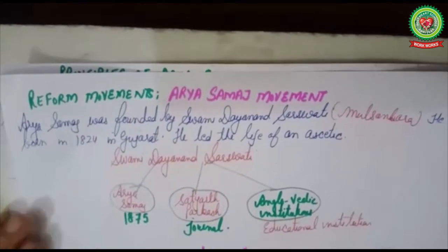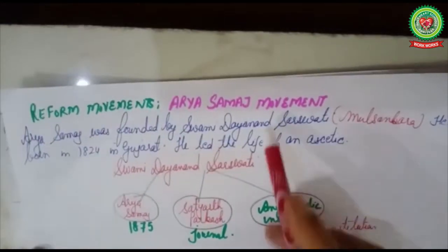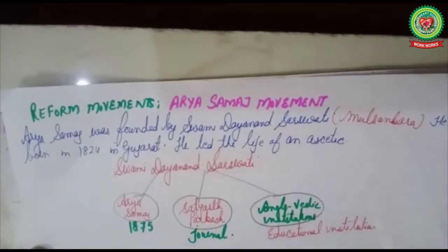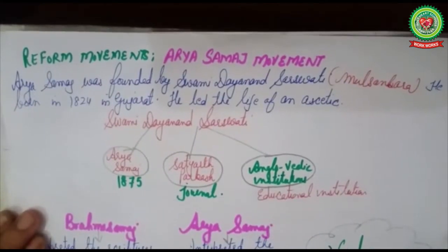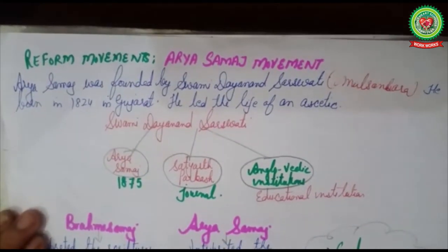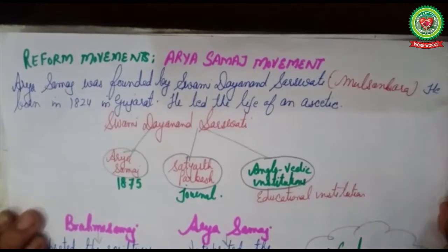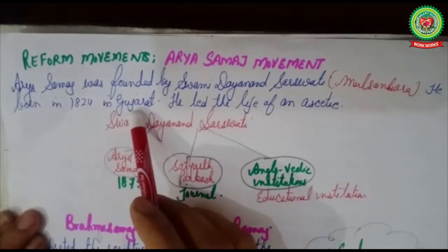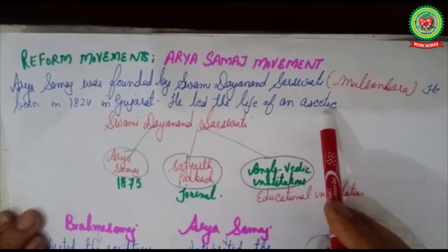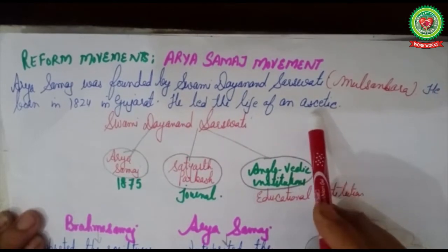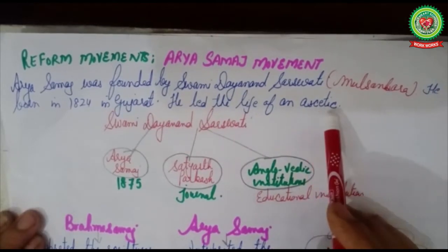First we will discuss the Arya Samaj movement. Arya Samaj was founded by Swami Dayanand Saraswati, whose real name was Mool Shankar. He was born in 1824 in Gujarat. He led the life of an ascetic — a person who leads a highly self-disciplined life and stays away from the comforts of life.